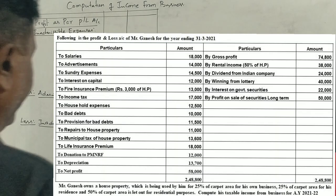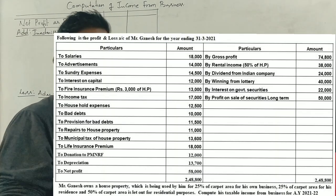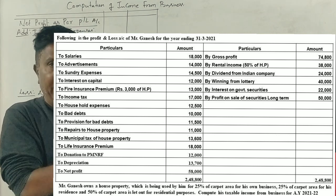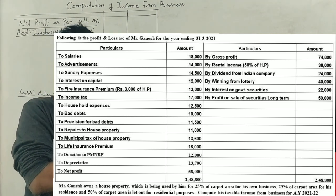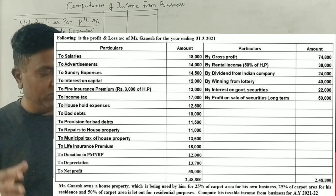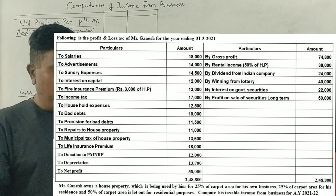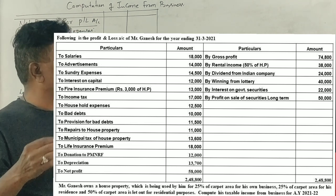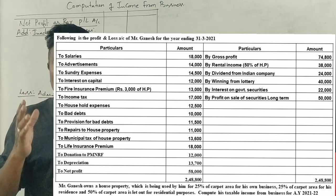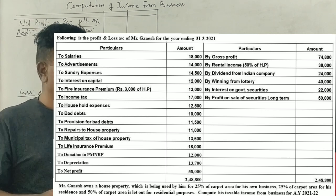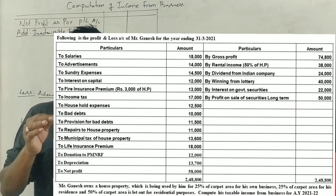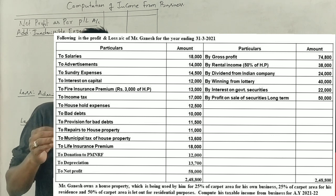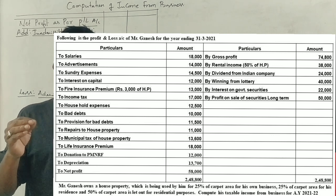Hello students, this is an income tax lecture for BBA students of Bangalore University and Bangalore North University. This is a 14-mark question from 2020-2029. The question involves the profit and loss account of Mr. Ganesh for the year ending 31st March 2019.